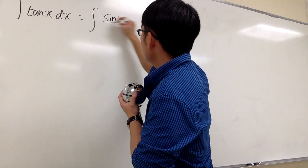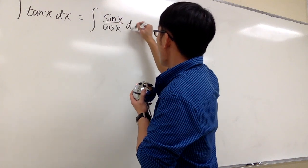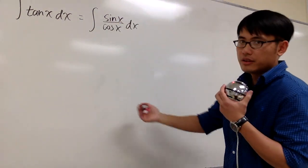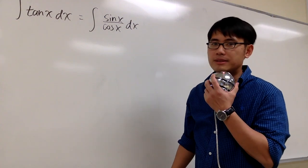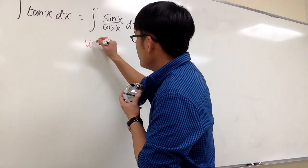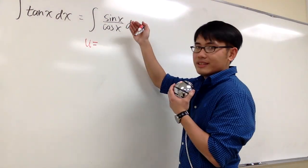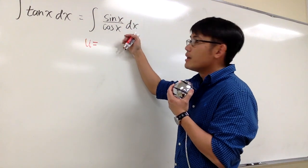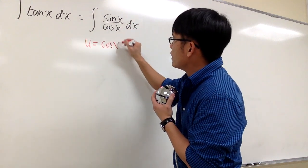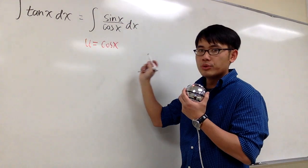So this is the same as integrating sin x on the top over cos x on the bottom. This way, we can use u substitution. I will let u equal to, we have two choices, either sin x or cos x, right? The correct choice is cos x. And let me show you this is true.